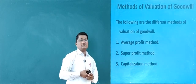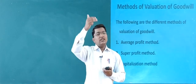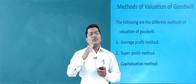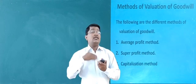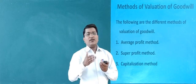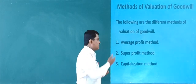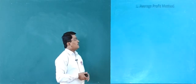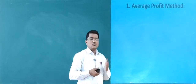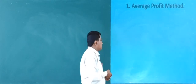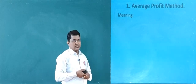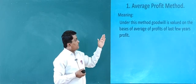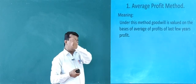Let's start with the first method, that is average profit method. What is meant by average profit method? Under this method, goodwill is valued on the basis of average profit of last few years' profit.